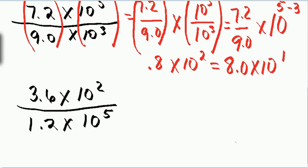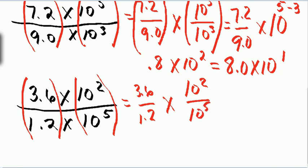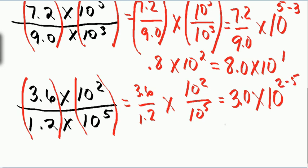Our last example: 3.6 times 10 to the 2 divided by 1.2 times 10 to the 5th. Again, group my numbers. So I have 3.6 divided by 1.2, times 10 squared divided by 10 to the 5th. 3.6 divided by 1.2 is 3.0, times 10 to the 2 divided by 10 to the 5th. I subtract my exponents: 2 minus 5. I end up with 3.0 times 10 to the negative 3.